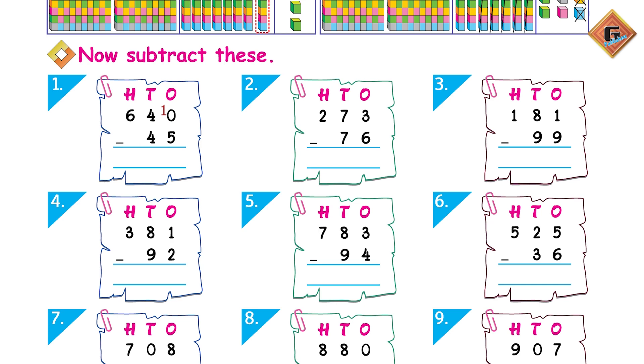Now subtract these: the first one is 640 minus 45. You can't subtract 5 from 0, so you are going to borrow 1 ten. Now you have 10 ones. 10 minus 5, what is going to be the answer? Yes, very good, it is 5.